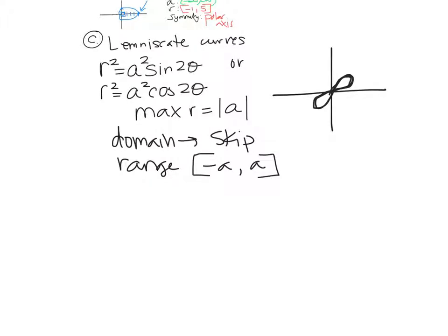The reason the domain is tricky is that when you graph this, because it's R squared, you have to take the square root. Anytime you take the square root, you have to have a positive number. What values of theta make sine positive? See how tricky that is? We're not going to do that, so you're welcome.